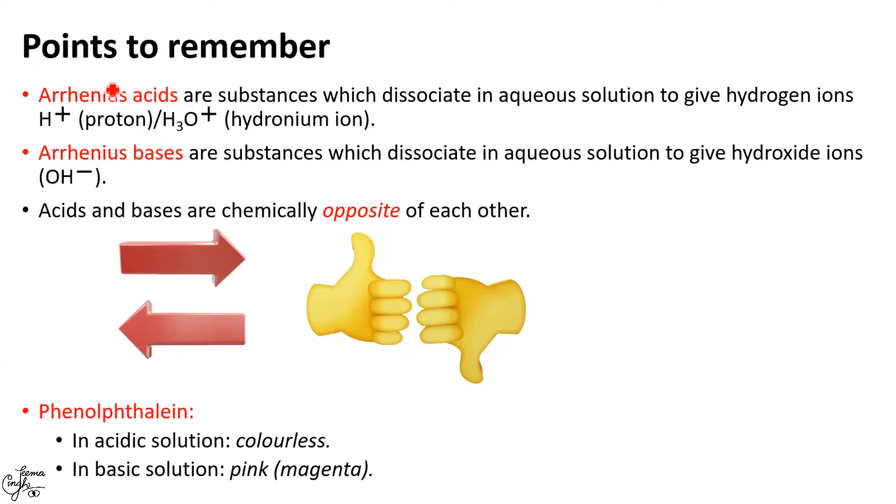We have studied that Arrhenius acids are substances that furnish hydrogen ions or hydronium ions when dissolved in water, whereas bases according to Arrhenius theory are substances that give hydroxide ions when dissolved in water. For more details, you can refer to the link provided on top. I've also explained that acids and bases are chemically opposite of each other. That is, they nullify, cancel, or neutralize the effect of one another.